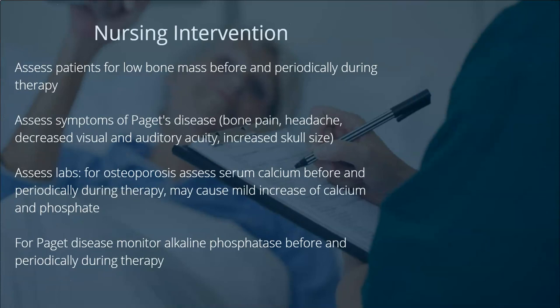For nursing interventions, assess the patient for low bone mass before and periodically during therapy, primarily by assessing labs. Assess serum calcium before and periodically during therapy. Hypocalcemia and vitamin D deficiency should be treated before initiating alendronate therapy. The medication may cause a mild increase of calcium and phosphate. Also assess symptoms of Paget's disease: bone pain, headaches, decreased visual and auditory acuity, and increased skull size. Monitor alkaline phosphatase before and periodically during therapy.